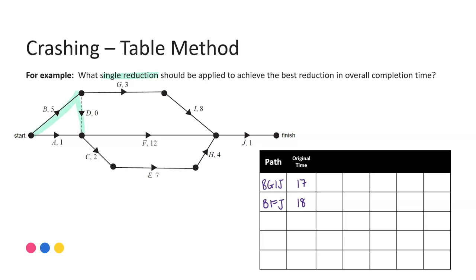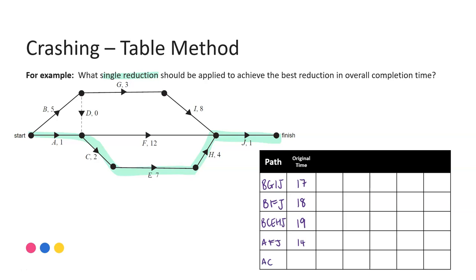Next, going B, dummy, C, E, H, J — the length of that path is 19. Then A, F, J at 14. And finally A, C, E, H, J at 15. So the current critical path is 19, running through B, the dummy edge, C, E, H, and J. Those are the values I should be concentrating on in order to find possible reductions.